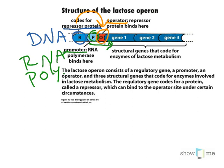Immediately following the operator are the series of genes. In the case of the lac operon here, there are three genes, just called gene 1, 2, and 3, which code for the proteins in the metabolic pathway that is regulated by this operon. The exact name of the genes is not overly important for you to know, but the overall structure of the operon is. All operons have the same basic parts: they code for the repressor protein, the promoter is right after that, and then this operator region followed by the genes.